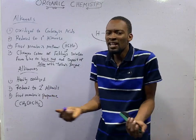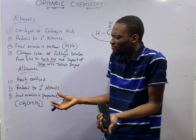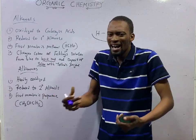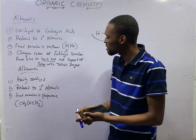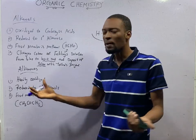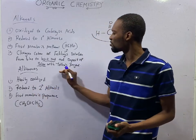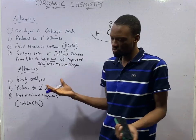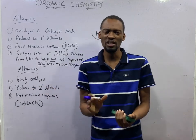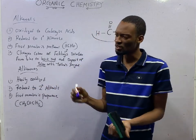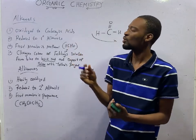Fehling's solution is a mild oxidizing agent that contains copper ions. Meanwhile, Tollens' reagent is a mild oxidizing agent that contains the complex ion of silver and ammonia, Ag(NH₃)₂⁺.